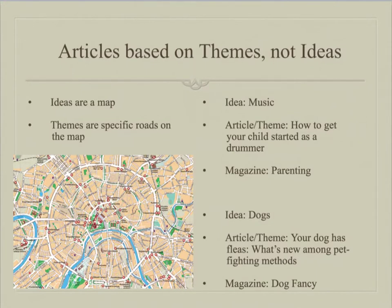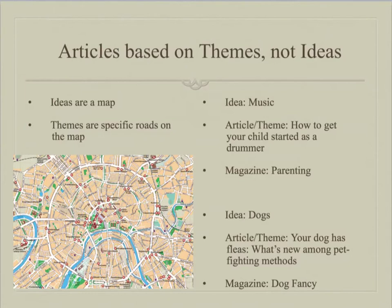Articles are really based on what we call themes — different from your five-paragraph essay theme, more like the nut graph in news writing. There's always a paragraph relatively early in every article that says: this is what the story is about. The idea is a map, and the theme is the particular roads on that map. For example, the idea may be music, but if you narrow it, you start thinking about how could you get a child started as a drummer. Is that a story for a drumming magazine? Maybe, but it may be better suited for a parenting or education magazine.